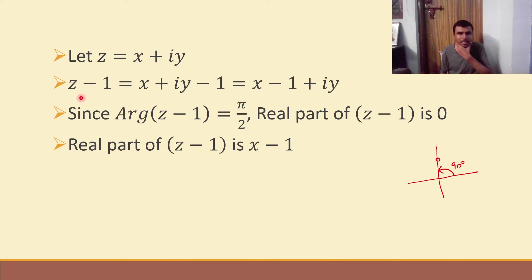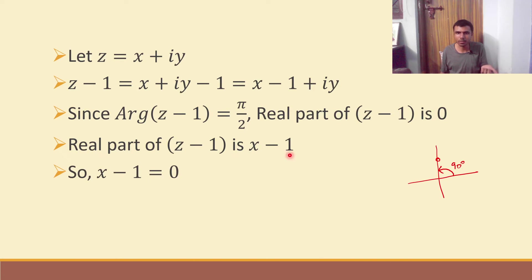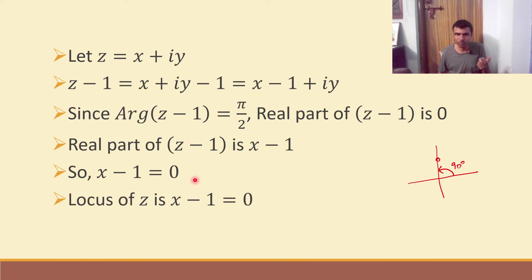The real part of z minus 1 is x minus 1, and the imaginary part is y. Since the real part equals 0, we get x minus 1 equals 0. Therefore, the locus of z is x equals 1.